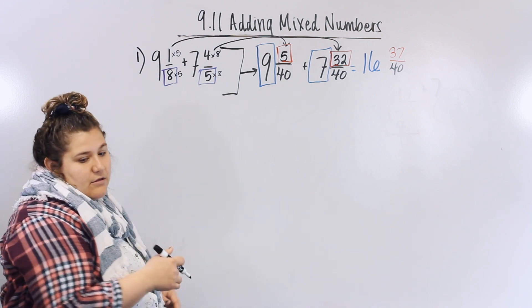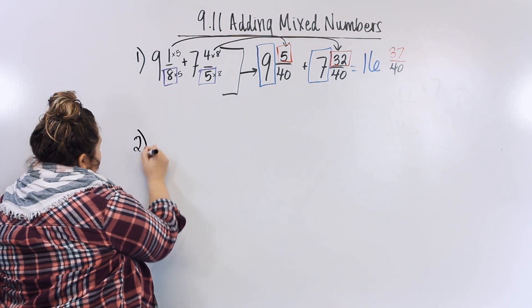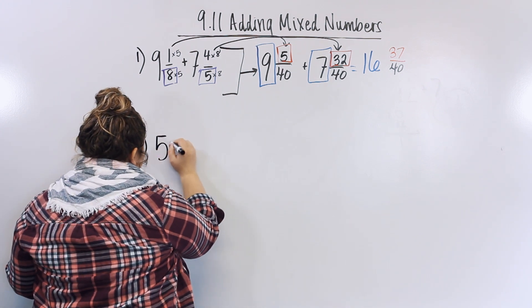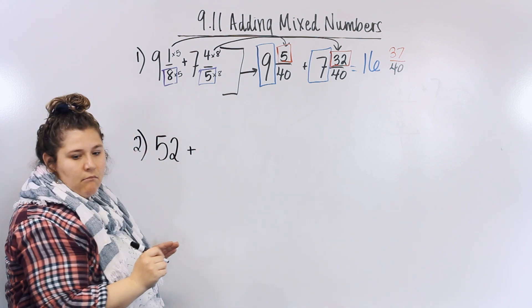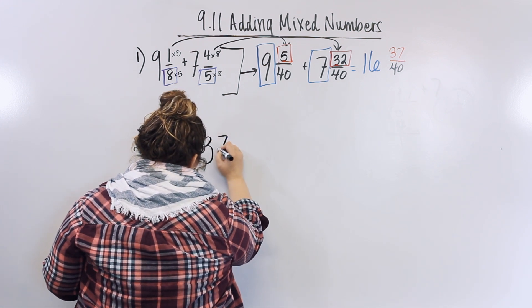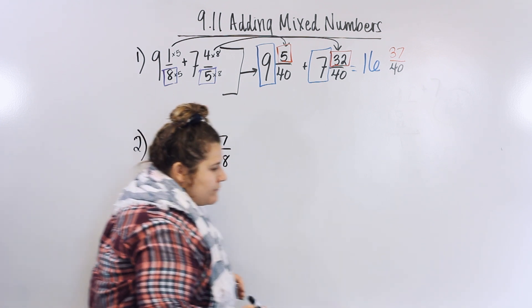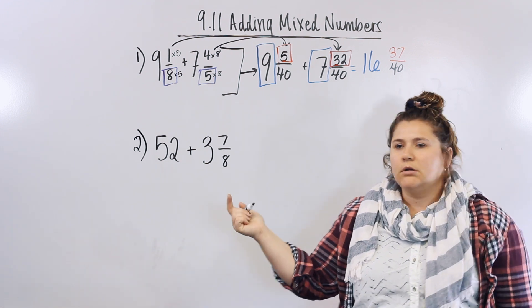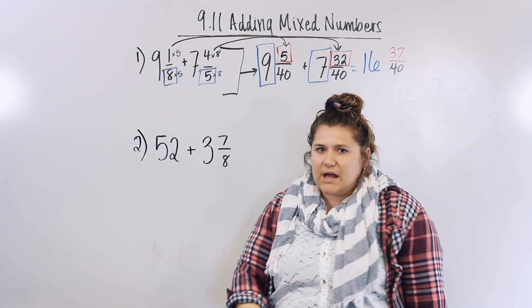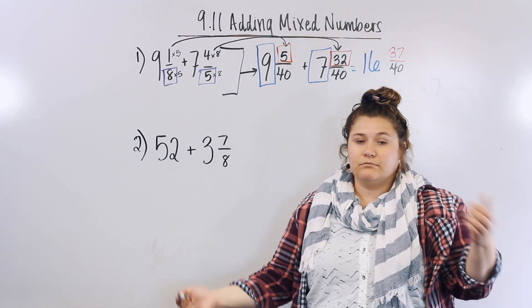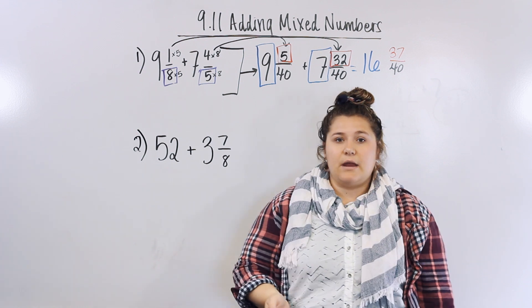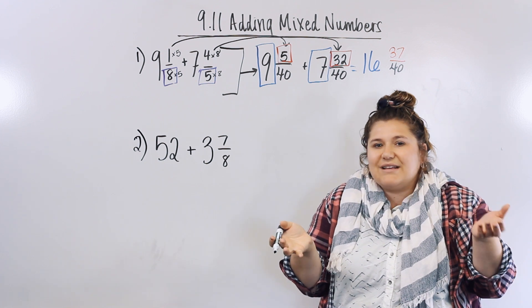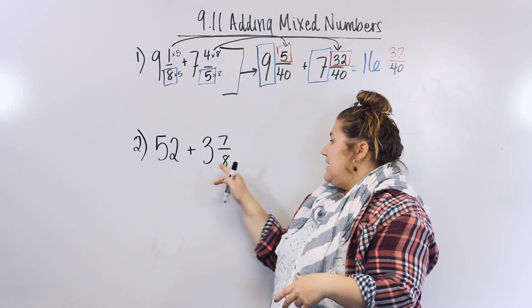So let's take a look at another problem, one more. Let's do fifty-two plus three and seven-eighths. But wait, this one doesn't have a fraction, it's just a whole number. Well guess what, you lucked out - you don't have to find a common denominator because if there's no fraction with the whole number, it's just like a zero, and anything plus zero is that number.